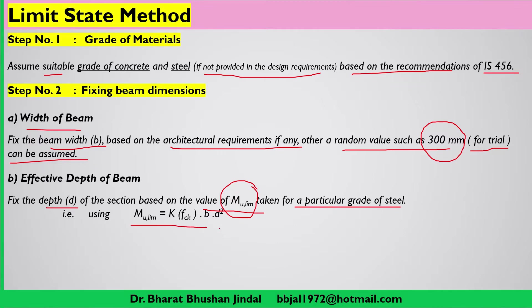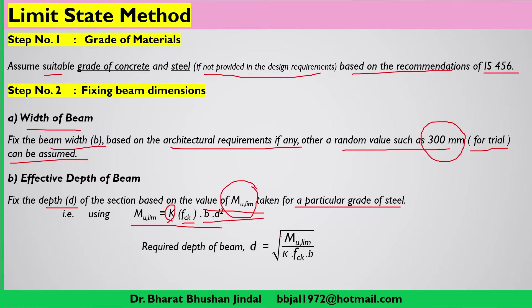The formula for Mu_limited depends on fck (grade of concrete), dimensions of the rectangular section, and a constant k which depends on the grade of steel. This information is available in IS 456 and was discussed in detail in previous lectures. From this formula we can rewrite the equation to find the required depth of beam: the required depth can be calculated by putting in Mu_limited, the constant k, fck, and b.